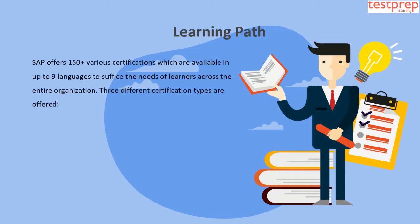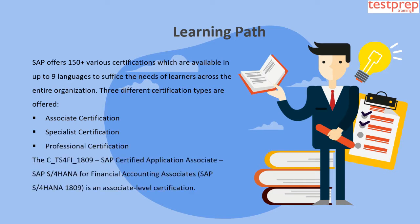Learning Path. SAP offers 150-plus various certifications available in up to 9 languages to suffice the needs of learners across the entire organization. Three different certification types are offered: 1. Associate Certification. 2. Specialist Certification. 3. Professional Certification. The C_TS4FI_1809 SAP Certified Application Associate — SAP S/4HANA for Financial Accounting Associates is an associate-level certification.